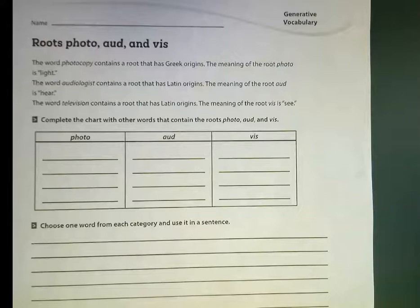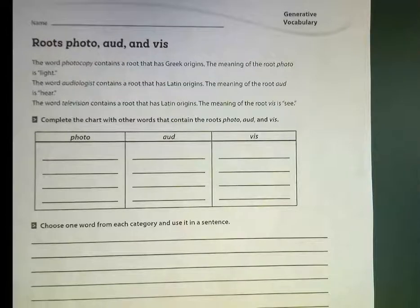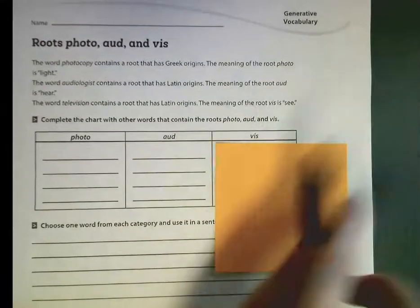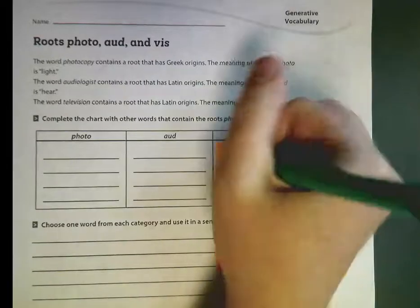The word photocopy contains a root that has Greek origins. The meaning of the root photo is light. So what's an example we can think of — a word that has photo and has something to do with light? I'm going to write on my sticky note right here. We have photography, because sometimes there's a flash with the camera, so we can think about that.